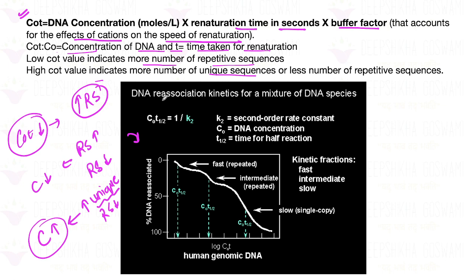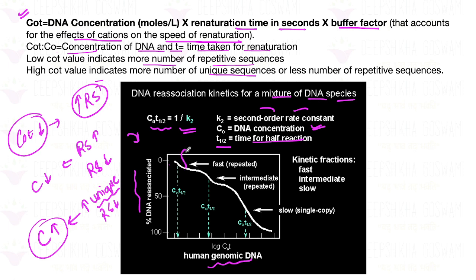In this graph showing DNA re-association kinetics for a mixture of DNA species, you can see where repetitive sequences are more, they appear in the fast re-associating fraction at low Cot values. Then at an intermediate level, there are moderately repetitive sequences — repeated but fewer in number. And in the slow region, you can see single-copy or unique sequences.